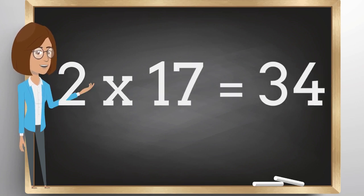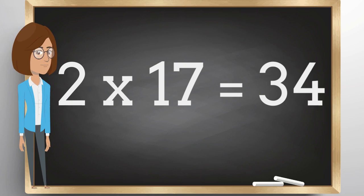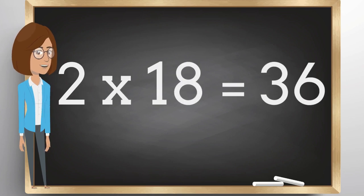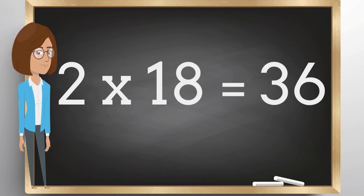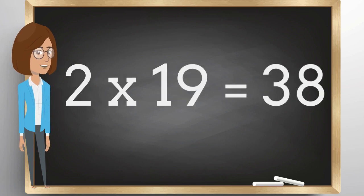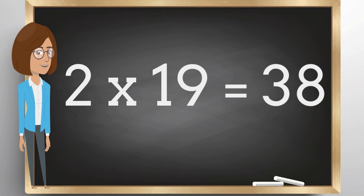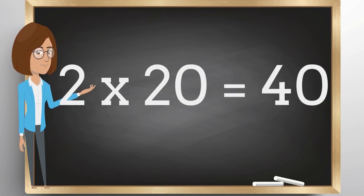2 x 17 is 34. 2 x 18 is 36. 2 x 19 is 38. 2 x 20 is 40.